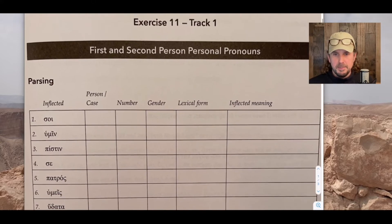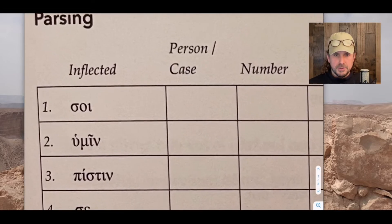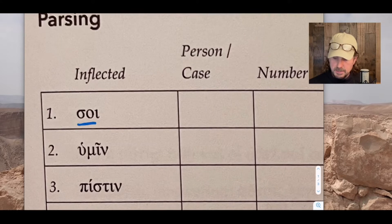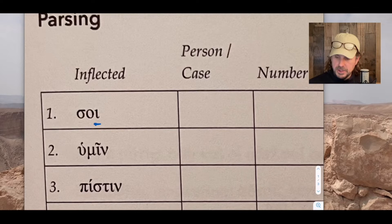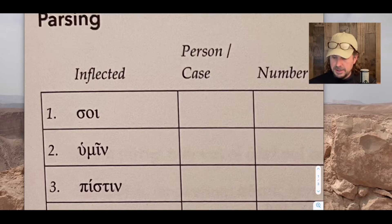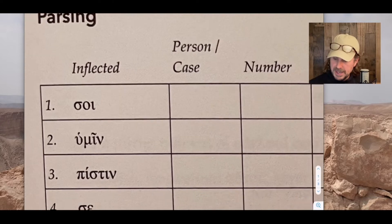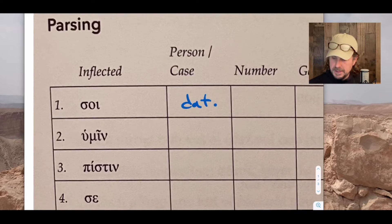This is from the workbook. In our parsing section, our first challenge is the word Sigma-Omicron-Iota — σοί. If we remember that the iota functions in the pronouns like a third declension, the dative does. So it's the iota that we would expect as the ending of a dative, but it stays like a third declension at the end of the word without subscripting. So the case of this is dative, and the number is singular.